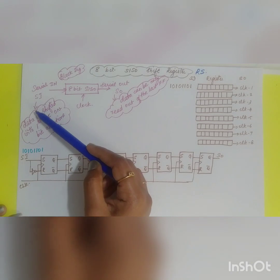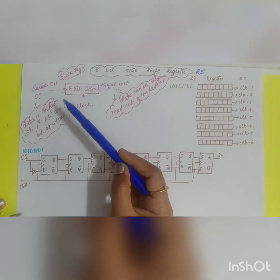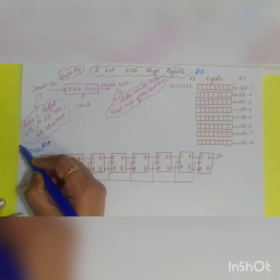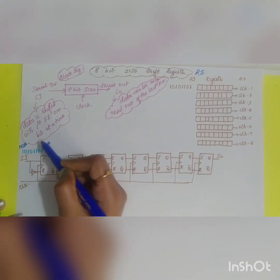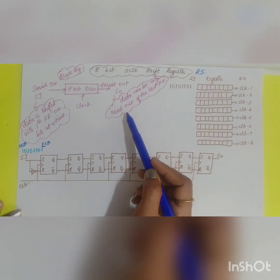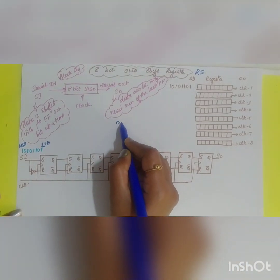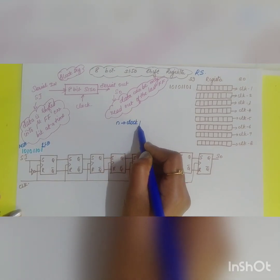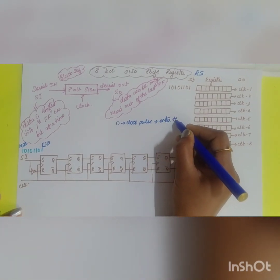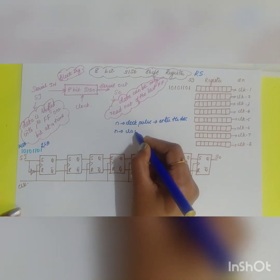In the serial input, data is shifted into the first flip-flop one bit at a time, entered from the LSB. So the first data to be entered will be the least significant bit and it proceeds towards the MSB. For the serial output, data can only be read out of the last flip-flop. The disadvantage is that it requires n clock pulses to enter the data and another n clock pulses to read the data.